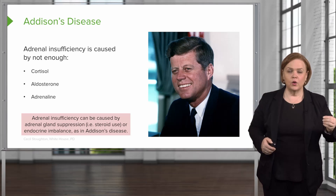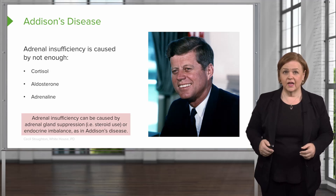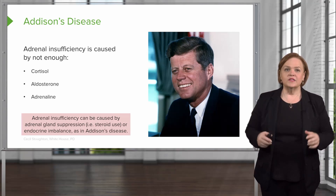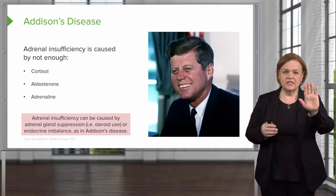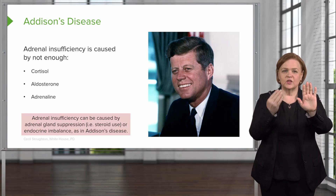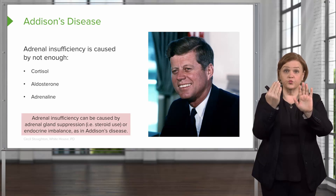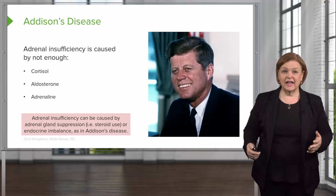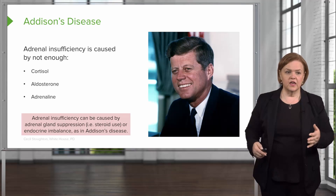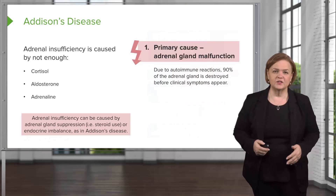Look at all the processes that will be affected — a lot of them. That's the cool part about the endocrine system: if Cushing's has these symptoms, then Addison's is going to be the exact opposite. People oftentimes complain about the endocrine system, but it's one of the simplest yet complex things you'll learn in nursing school.